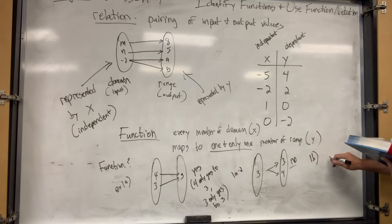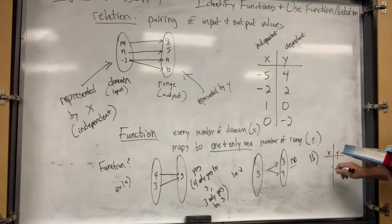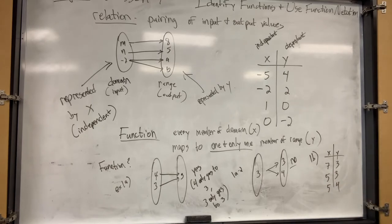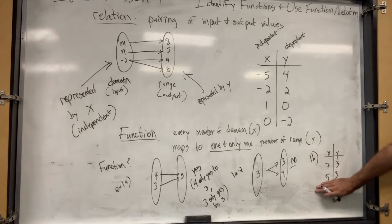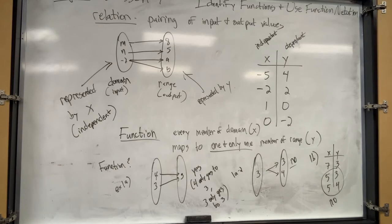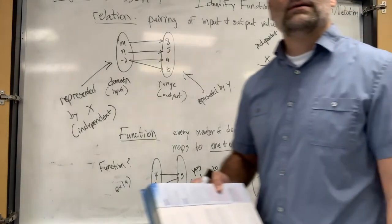Here's example 1B as an XY chart. 7 goes to 3, 5 goes to 3, 5 goes to 4 - is that a function? No. So far with 7 to 3 and 5 to 3 it was still a function, but now we have 5 also going to 4. So it's not a function because of that situation - an input going to two different outputs.